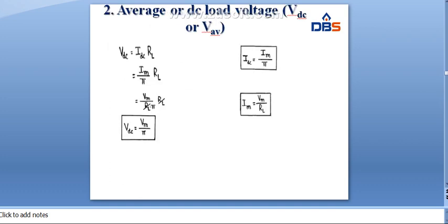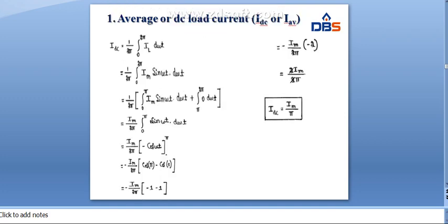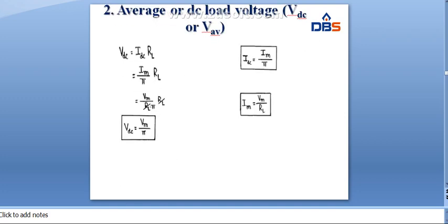Next, the average voltage or DC voltage V_dc. Using V = I × R, we get V_dc = I_dc × RL. Since I_dc = Im/π and Im = Vm/RL, substituting gives V_dc = Vm/π. That is the average voltage or DC voltage.